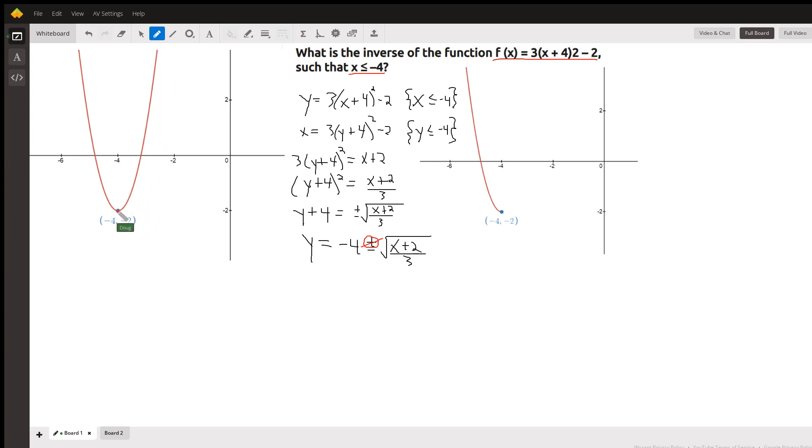It's a parabola with vertex at negative 4, negative 2, but it doesn't pass the horizontal line test or the function is not one-to-one. So it doesn't have an inverse function. It has an inverse relation.